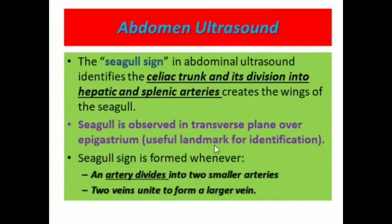The seagull sign is observed in the transverse plane over the epigastrium and is a useful landmark for identification. The seagull sign is formed whenever an artery divides into two smaller arteries, or two veins unite to form a larger vein.